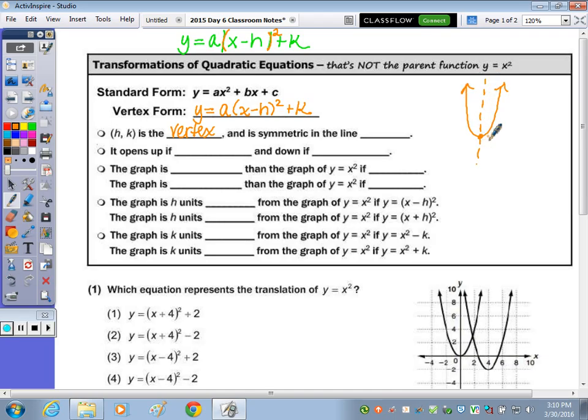So h, k is the vertex. Since the axis of symmetry always goes through your vertex or your turning point, and this is the point h, k, this is a vertical line, so it's always x equals whatever point it goes through on the x-axis. So this is going to be x equals h.